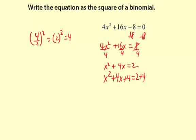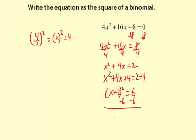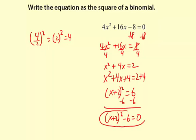Let's simplify on the left — we're going to have x plus 2 quantity squared as our binomial. 2 plus 4 is 6, and then I'll finally subtract 6 from both sides to make it equal to 0 again. So we're going to have x plus 2 quantity squared minus 6 equals 0. Here is our equation as the square of a binomial.